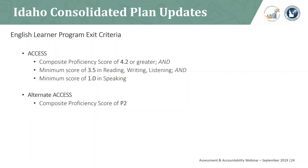I wanted to give everyone a quick update on some important changes to Idaho's consolidated plan that impact our English learners. Following the 2020 ACCESS administration, a student will be considered proficient when they receive a composite overall proficiency score equal to or greater than 4.2, with a minimum score of 3.5 in the domains of reading, writing, and listening, and a minimum score of 1.0 in the speaking domain. English learners with a significant cognitive impairment, as documented by an IEP and who meet all four alternate participation criteria, will exit when a P2 composite proficiency level has been met on the ALT ACCESS.